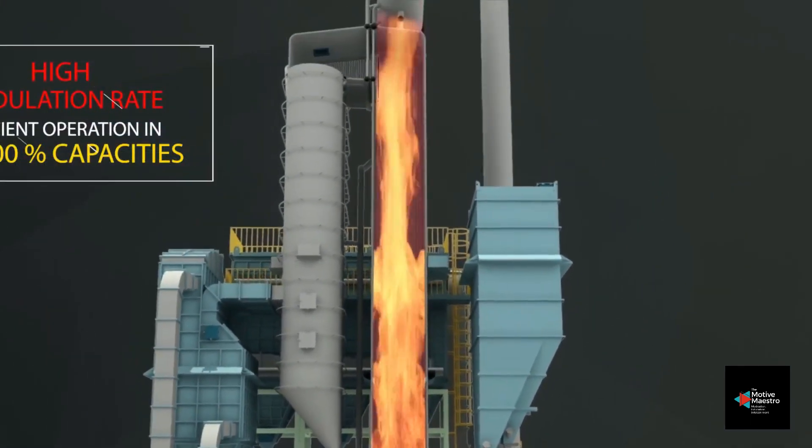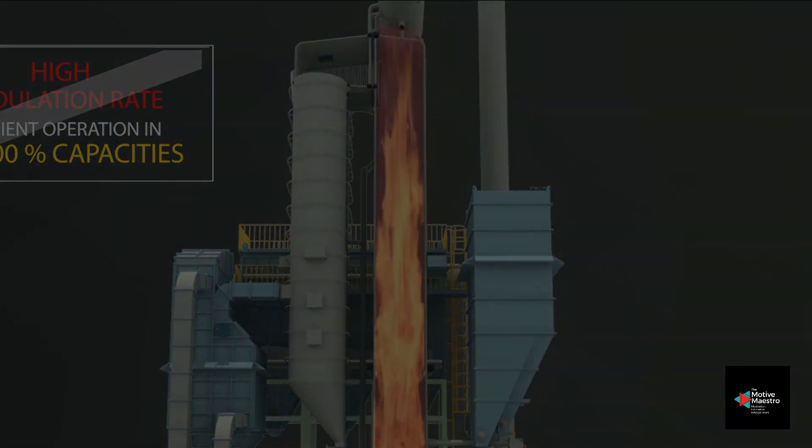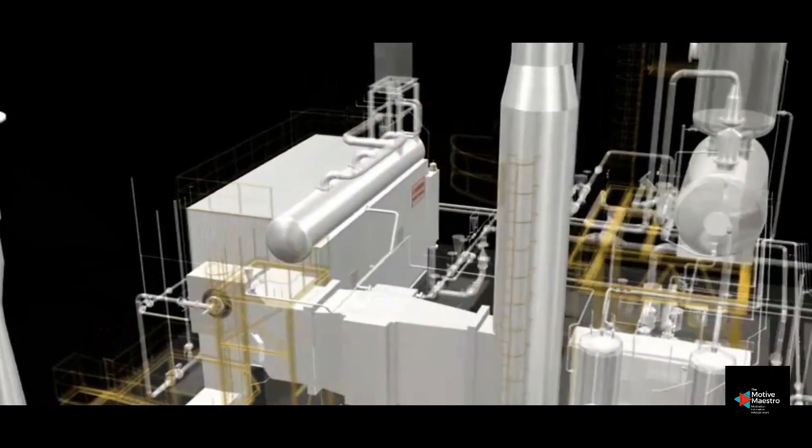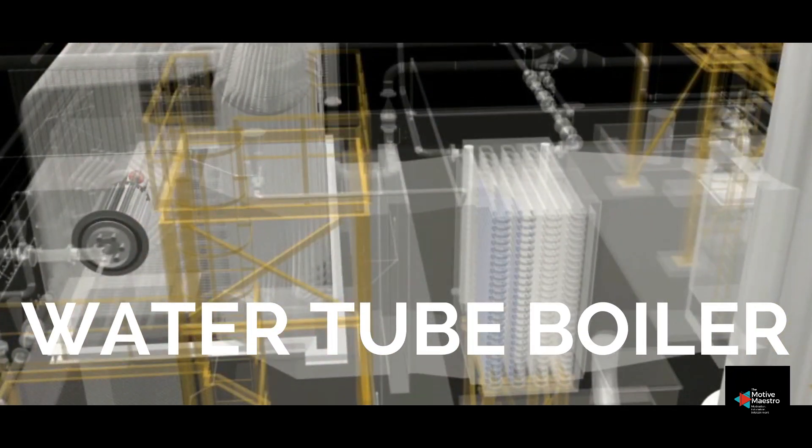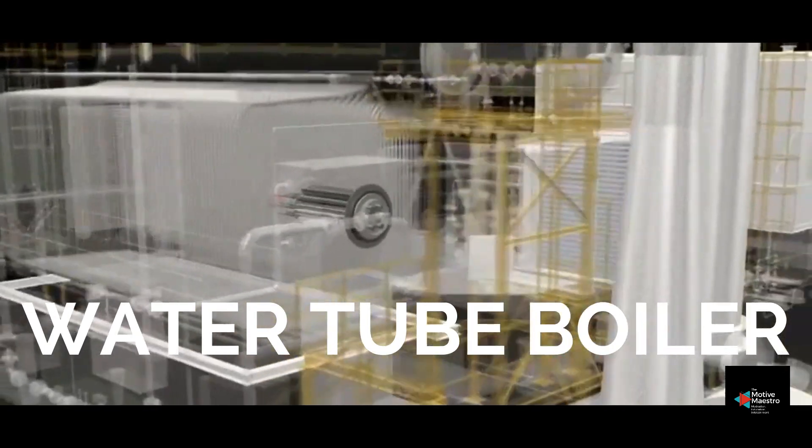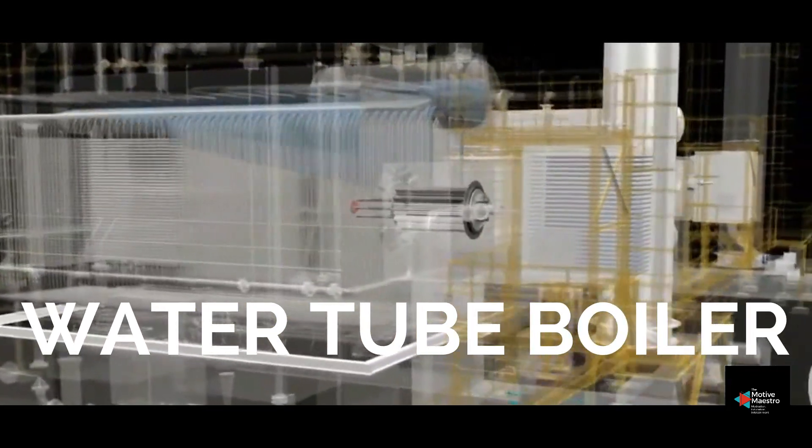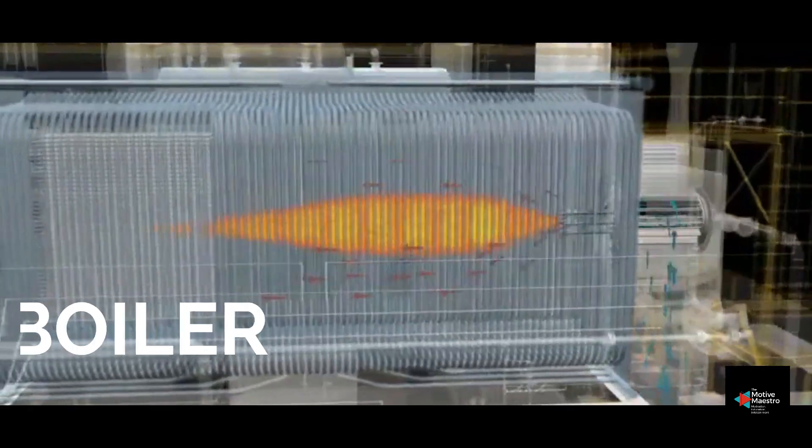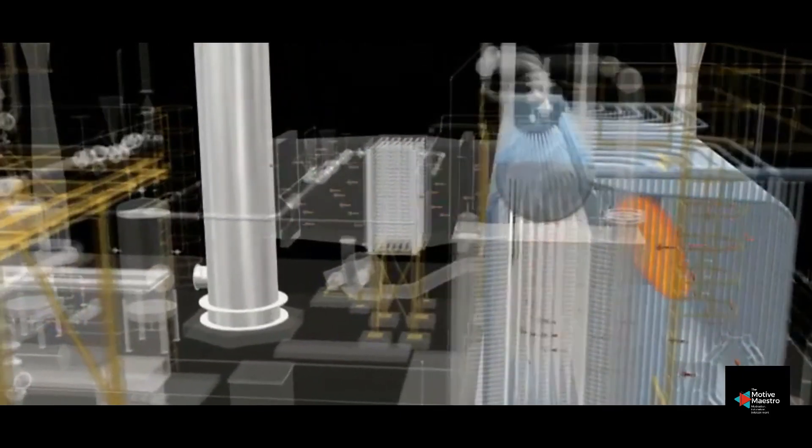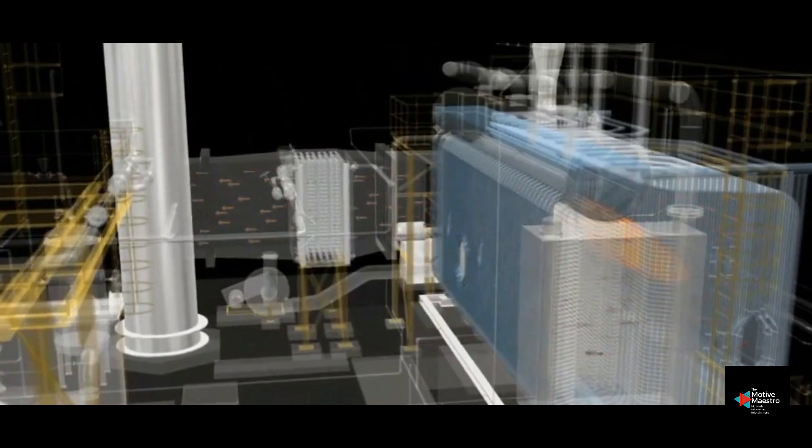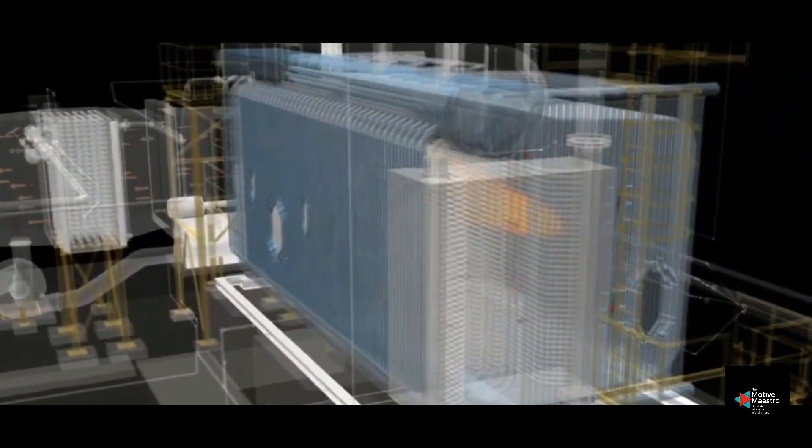The type of boiler we're using is a water tube boiler. Whenever you need a lot of steam at very high pressures it is advisable to use a water tube boiler. Steam turbines require steam at very high pressures and that's why we use water tube boilers. Water tube boilers also generate a lot of steam. They're very large, they can be greater than 40, 50 or 60 meters in height and these are the boilers that power stations in the power generation industry always use.